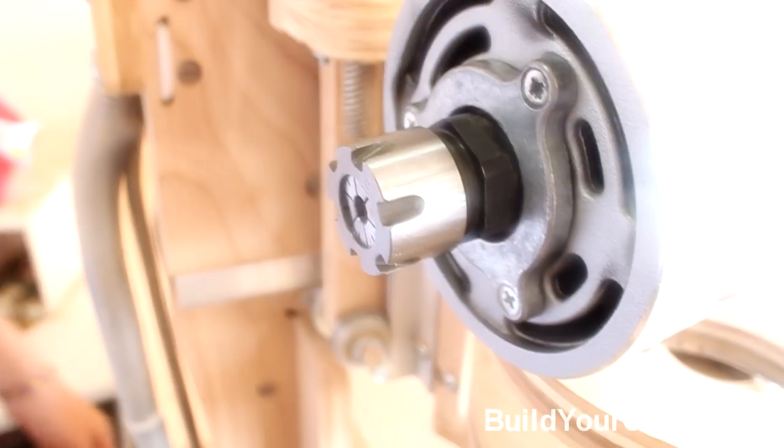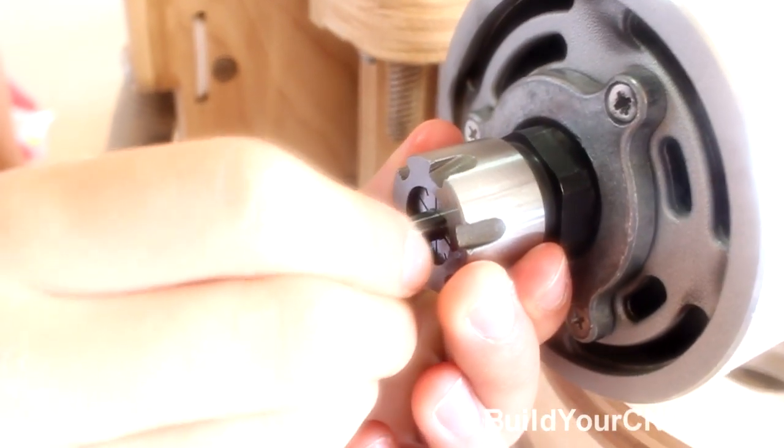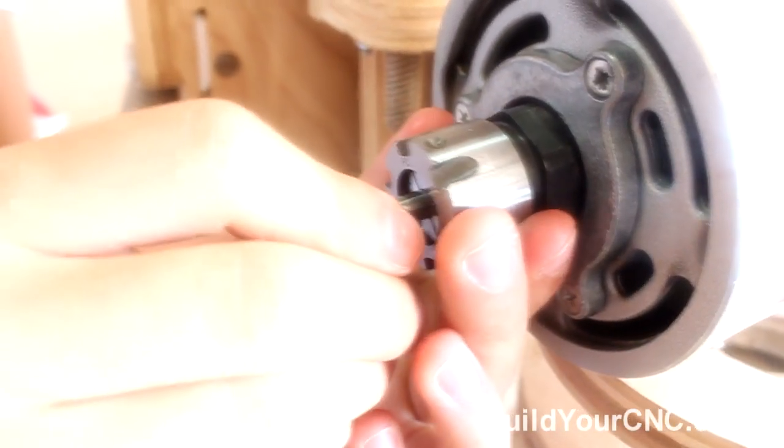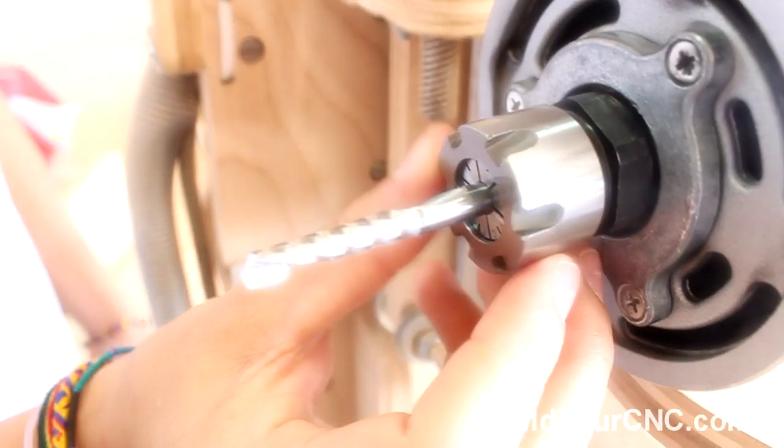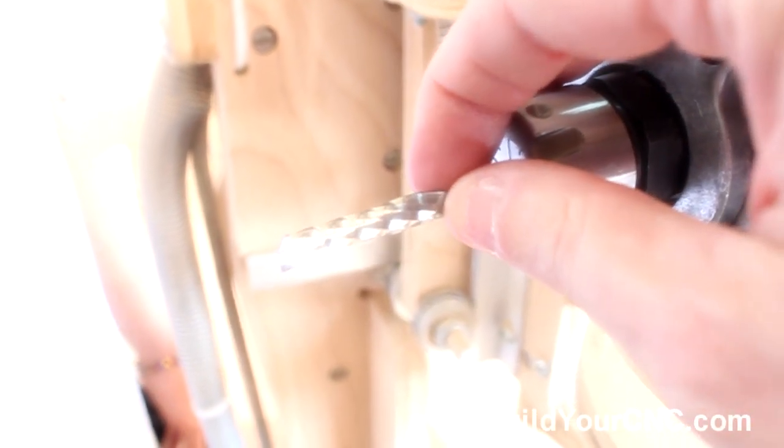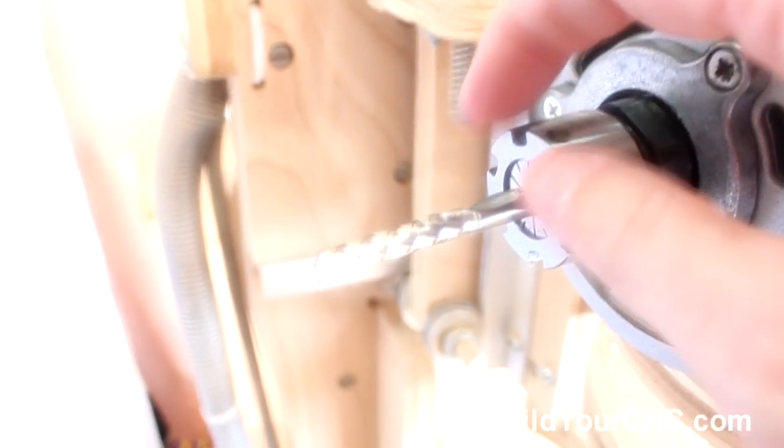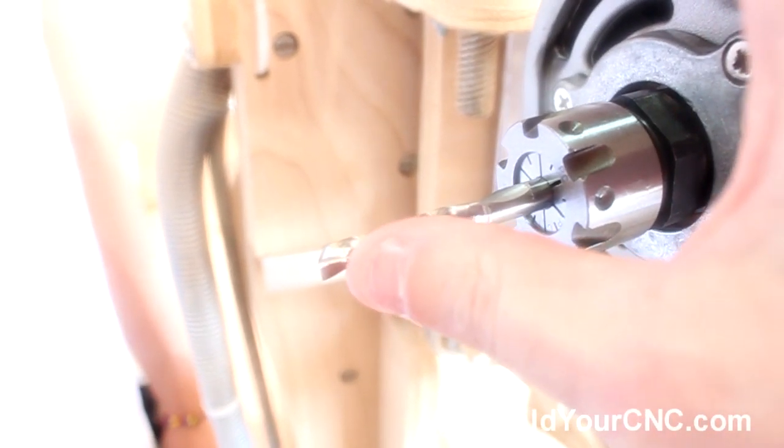Go ahead and put in the new bit and you want to try to put the bit in as far as you can without having too much of the shank show but you want enough of the flutes out. The importance in this is to make sure that this isn't going to be flexing too much. The longer the bit, the more deflection you're going to have at the end.